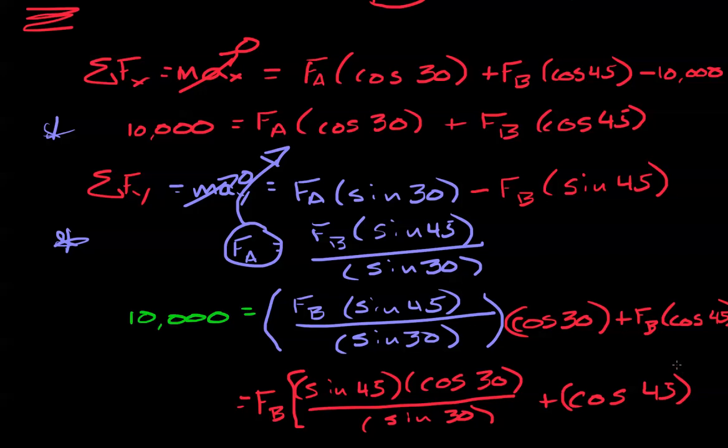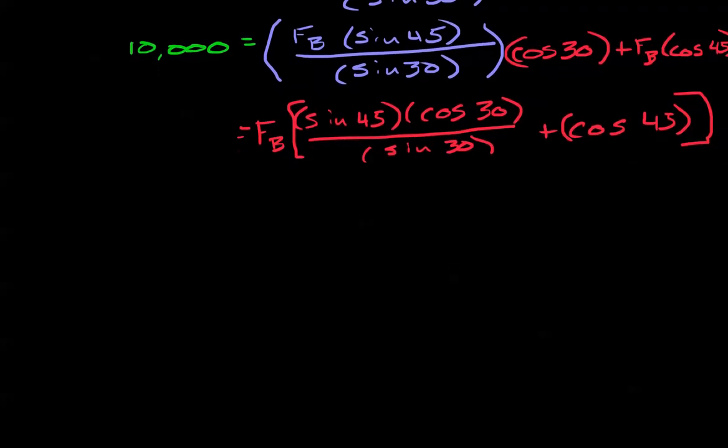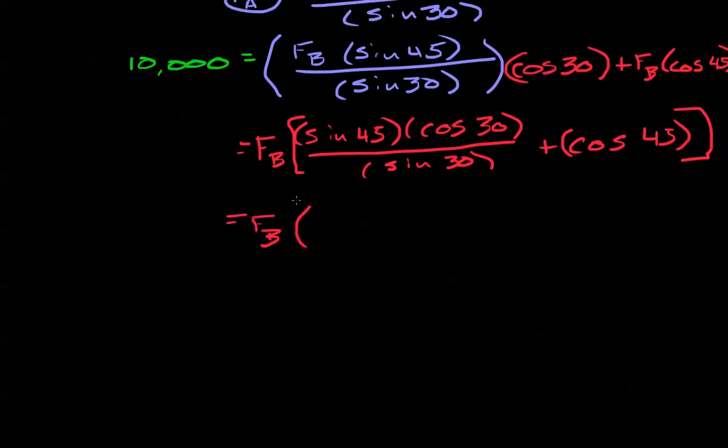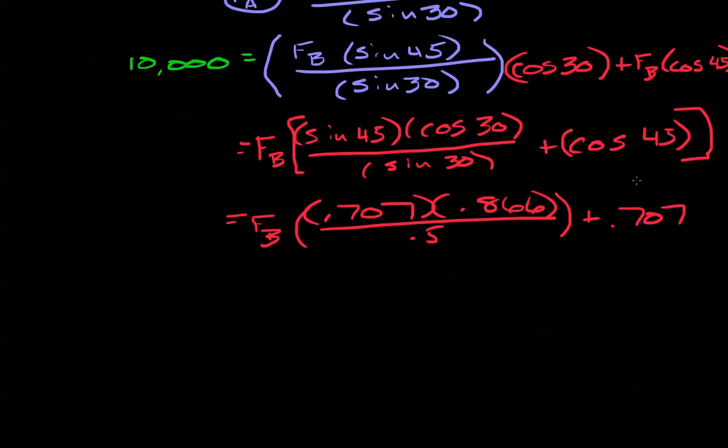I'm going to factor out my force B, and I have a sine of 45, let's put everything in the numerator and denominator, times cosine of 30, all over sine of 30 plus cosine of 45.